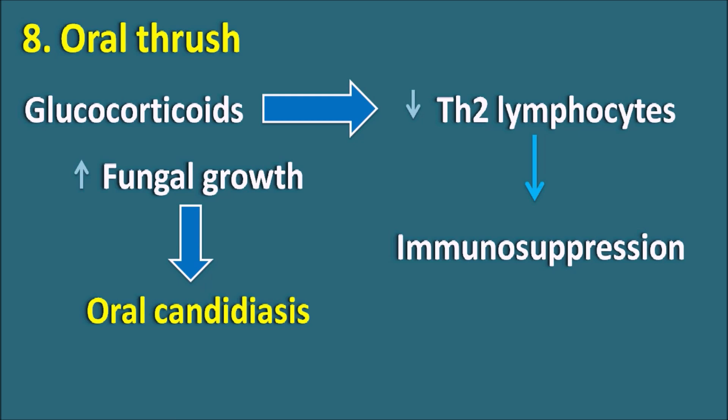So these are the side effects indicated by the word HERO: H indicates hirsutism, E indicates edema, R indicates retarded growth, and O indicates oral thrush. In this way, the side effects of glucocorticoids can be remembered as HOW GC IS HERO.